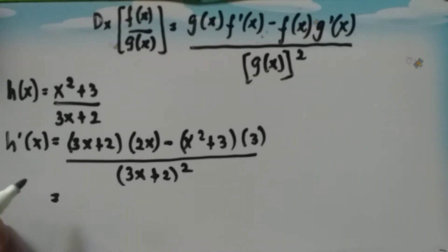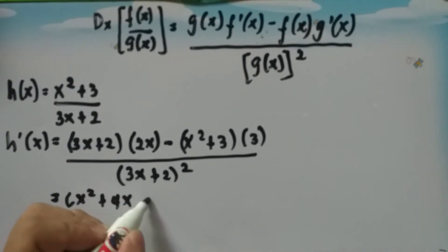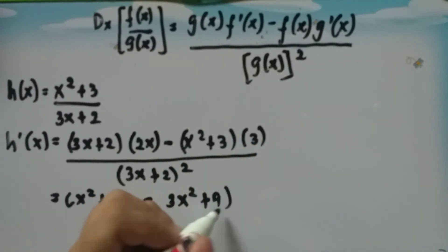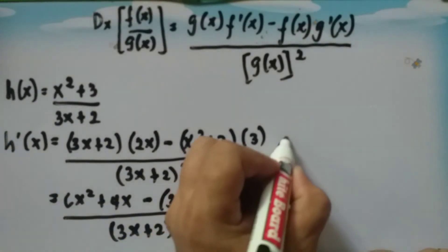We multiply these two factors: 3x plus 2 times 2x. So 2x times 3x is 6x squared, 2x times 2 is 4x. Then minus: x squared times 3 is 3x squared, and 3 times 3 is 9, all over 3x plus 2 squared.